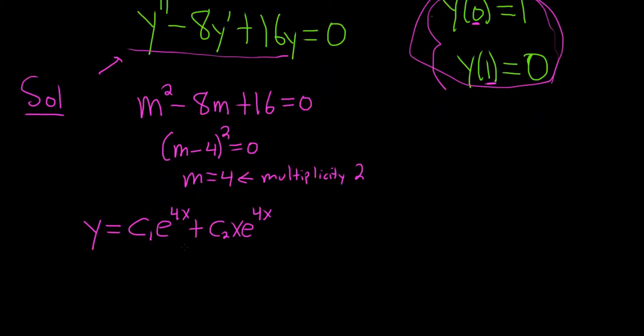Let's go ahead and use our conditions. So y of 0 equals 1 is our first condition. So that means we're going to get c1 e to the 0 plus c2 times 0 e to the 0. Just putting in 0's for all the x's. And this is equal to 1. Well, this piece here is 0 because we have a 0. So we just get c1 times 1 equal to 1. So that means that c1 is equal to 1.